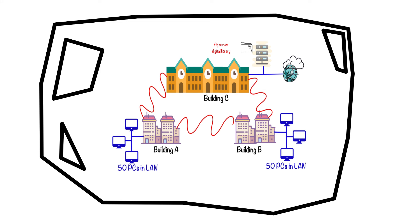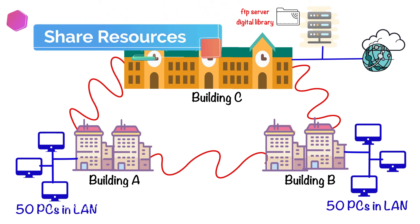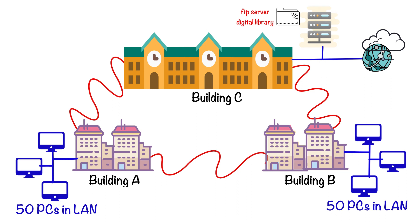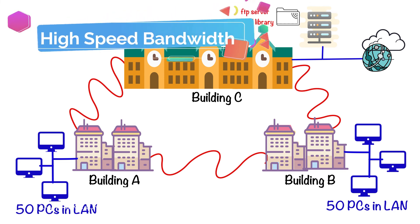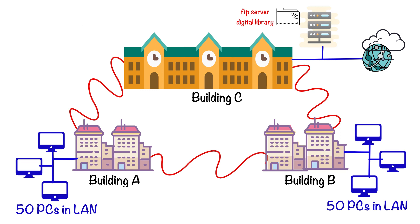Now let's look at the advantages of the campus area network. Since building C has the central resources like the FTP server, digital library, and internet access, by using the campus area network we can allow building C to share these resources with building A and B. Another great advantage of this interconnectivity among buildings is that they can share resources on high-speed bandwidth. In summary, when we form network connectivity among buildings in a campus area, we create a campus area network.